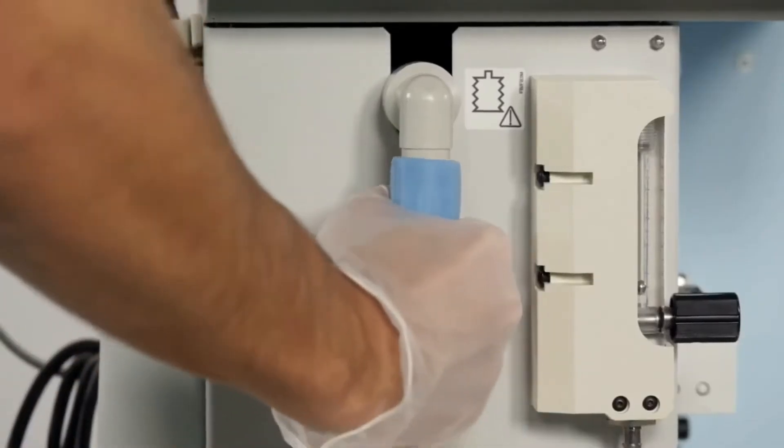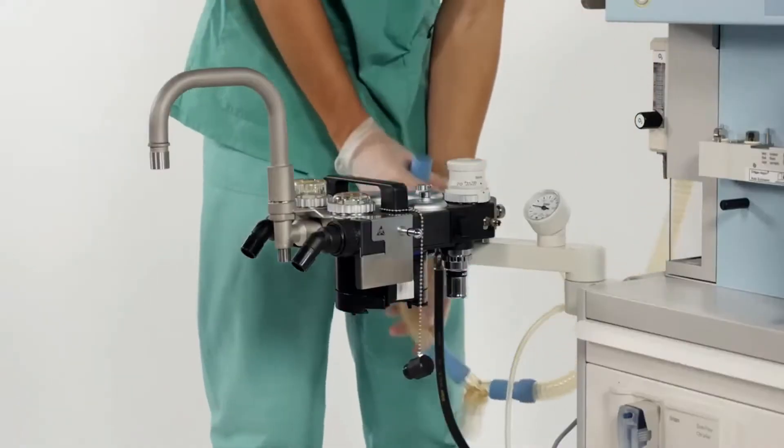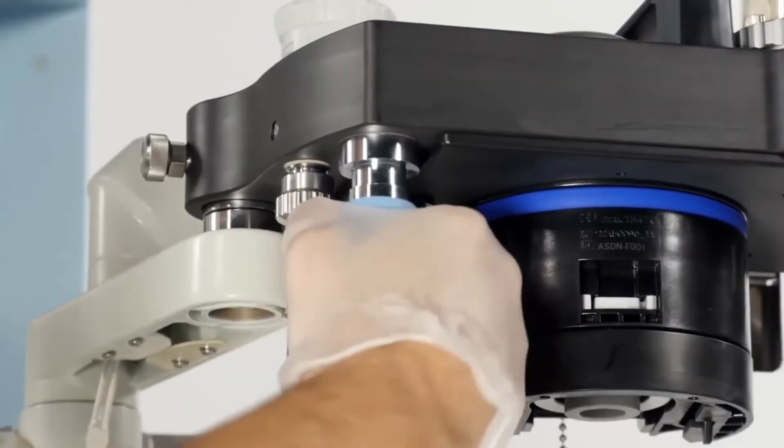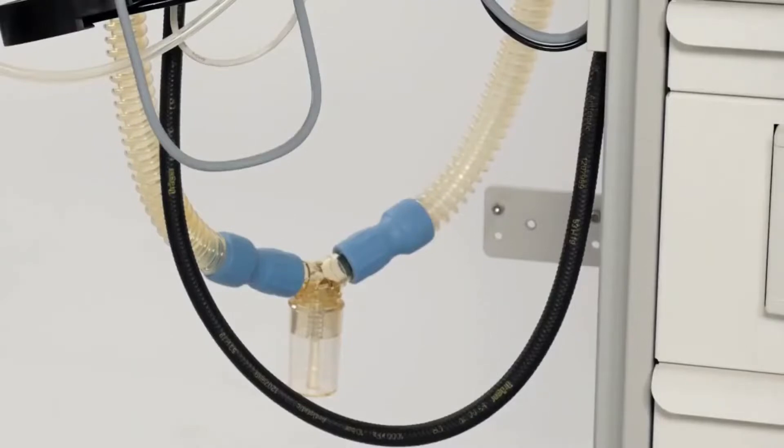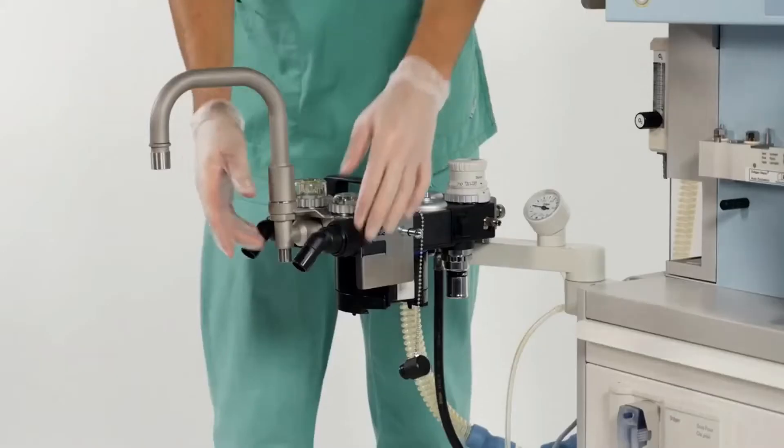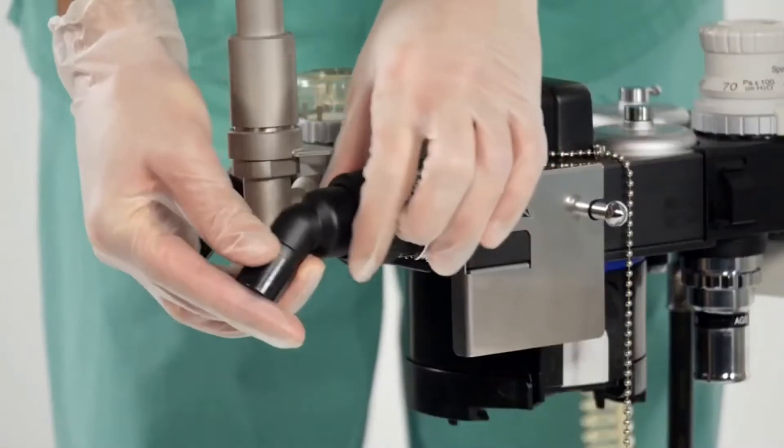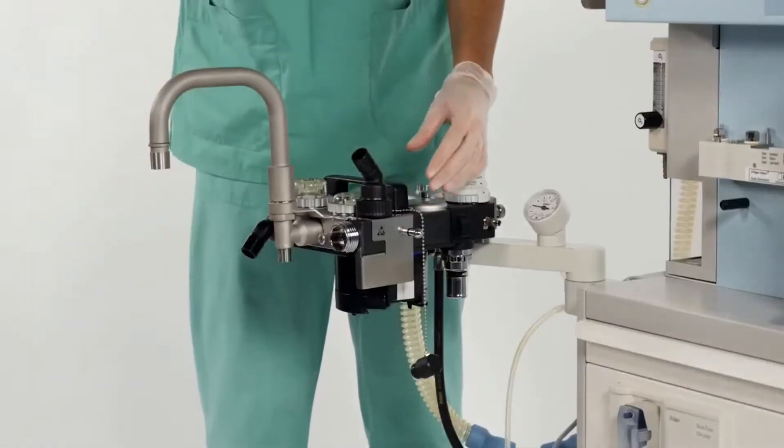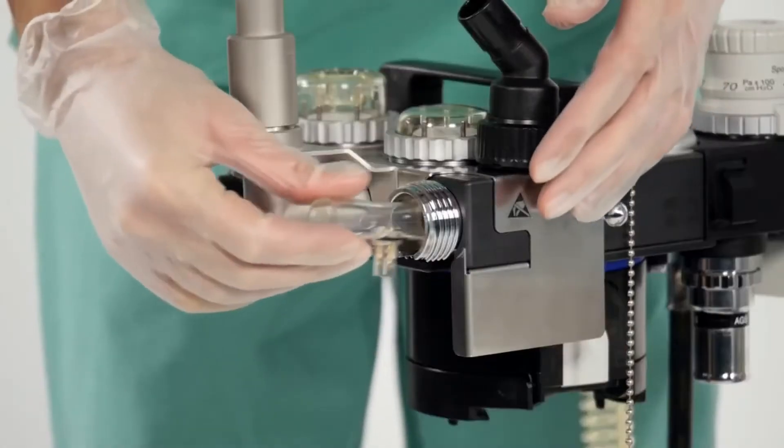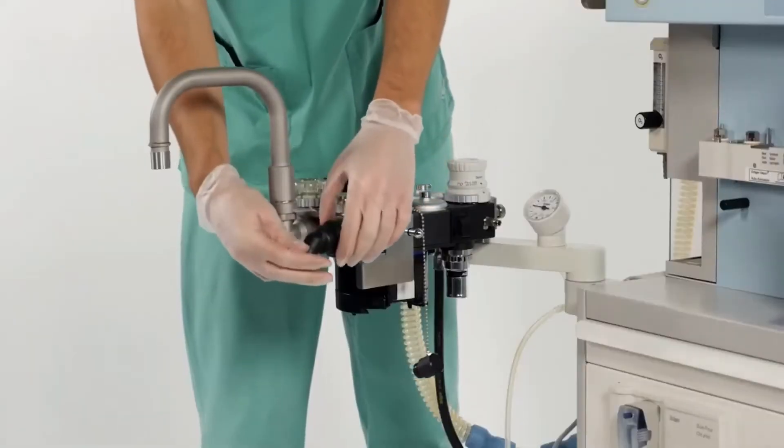Attach the ventilator hose to the ventilator and to the conical connector port on the underside of the COSY. Make sure that the water trap is at the lowest point of the connection. To insert the flow sensor, unscrew and remove the expiratory port from the breathing system. Insert the flow sensor and reinstall the expiratory port.